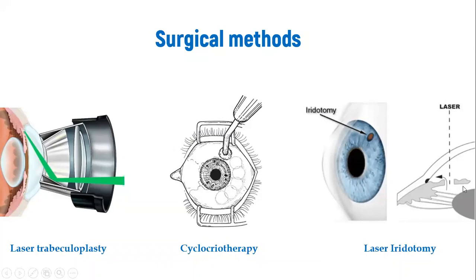In laser iridotomy, the laser makes a hole through the iris so aqueous humor can flow directly without having to travel the long route. In cyclocryotherapy, the cold probe around the ciliary body reduces aqueous humor production. In laser trabeculoplasty, laser applied to the trabecular meshwork creates openings to enable easier drainage of aqueous humor.